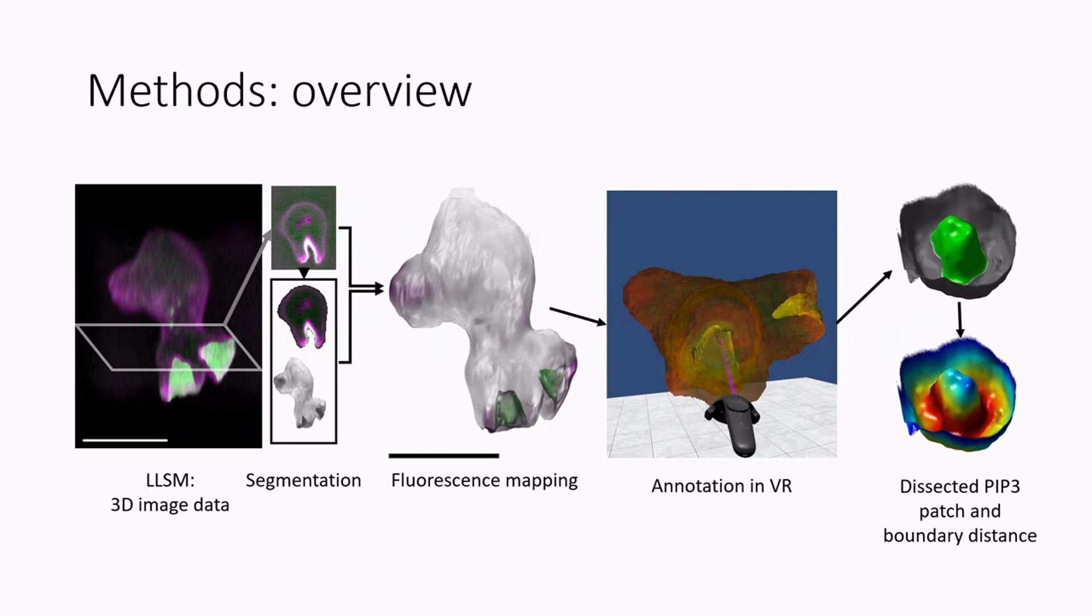And so what we can do then is we have a segmentation method which I'll talk about in a moment, and then from there we map fluorescence onto the segmented cell surface using just a nearest sort of maximal projection onto the surface.